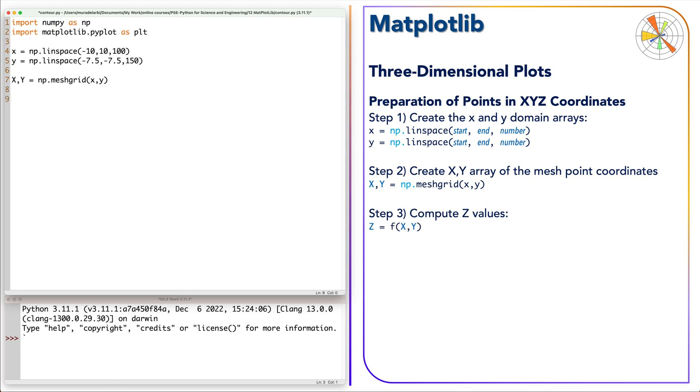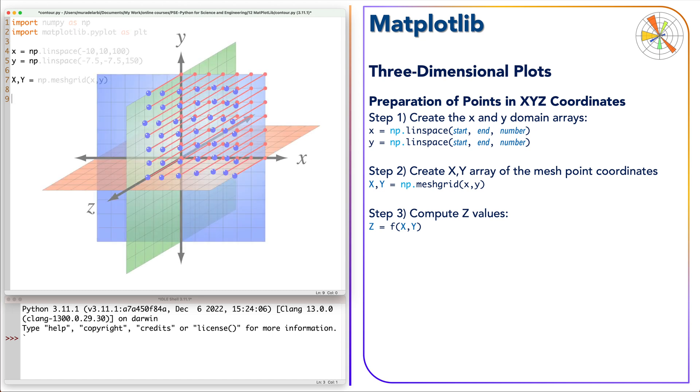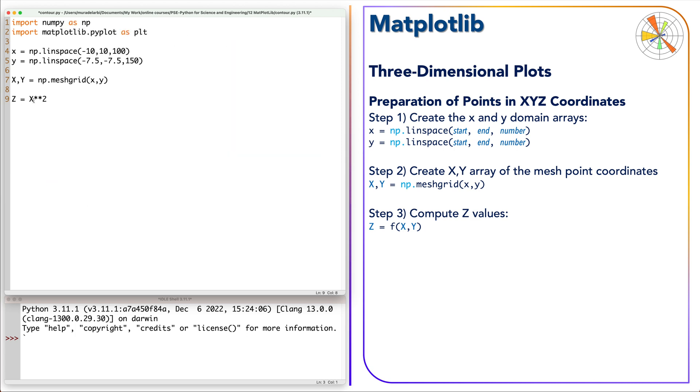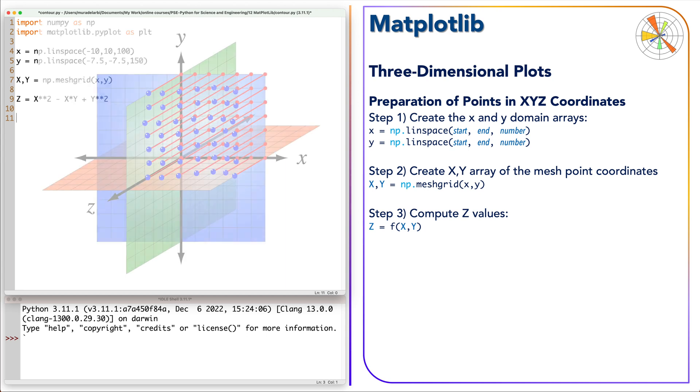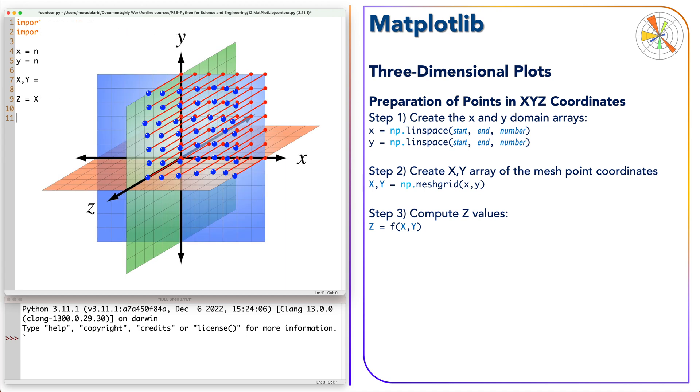Finally, by using the mathematical function f of X Y, we compute the values of Z at each point over the XY plane. As a result, we now have all points in XYZ coordinates and we are ready to plot them using any 3D plot function.